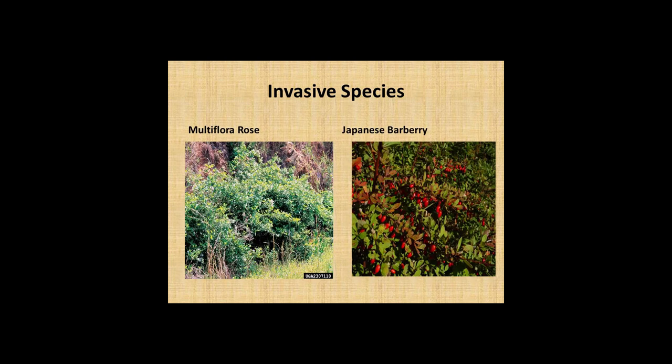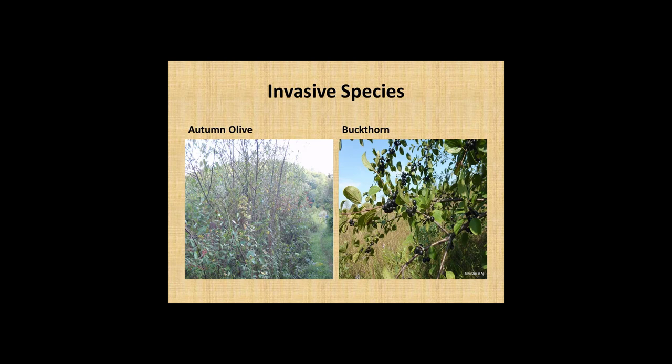Multiflora rose — this is just a pain. Everybody who has walked through their woods and encountered it knows. You'll be cut up and snag all of your clothes when you get out of the woods. Japanese barberry — it's a tough picture to see, but in my opinion, that's going to be the next explosion of invasive species coming to Northwest Illinois. I'm seeing it more and more often, even within the last five or six years. Autumn olive has silvery leaves. It's another exotic, as is buckthorn, which is a big problem in Northeast Illinois.